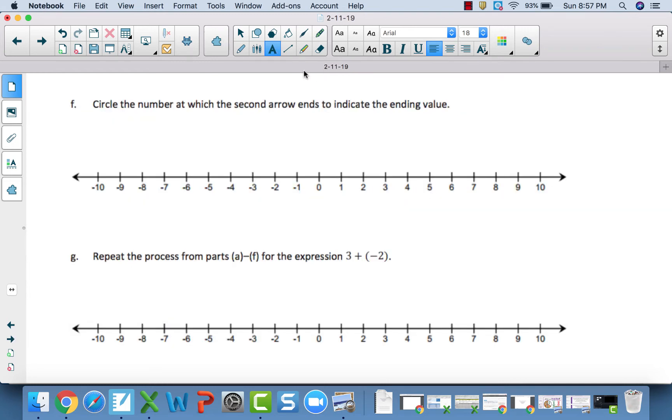So, I'm going to put the tail of the arrow right here at zero. Now, step number two says, draw the arrow two units to the left of zero and stop at negative two. Right there. Those are the first two steps, A and B. Start your tail at zero, draw your vector arrow two units to the left of zero and stop at negative two.